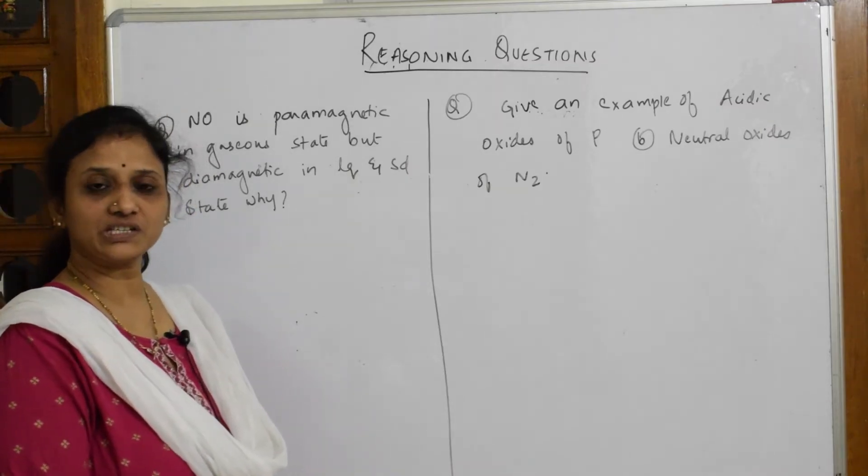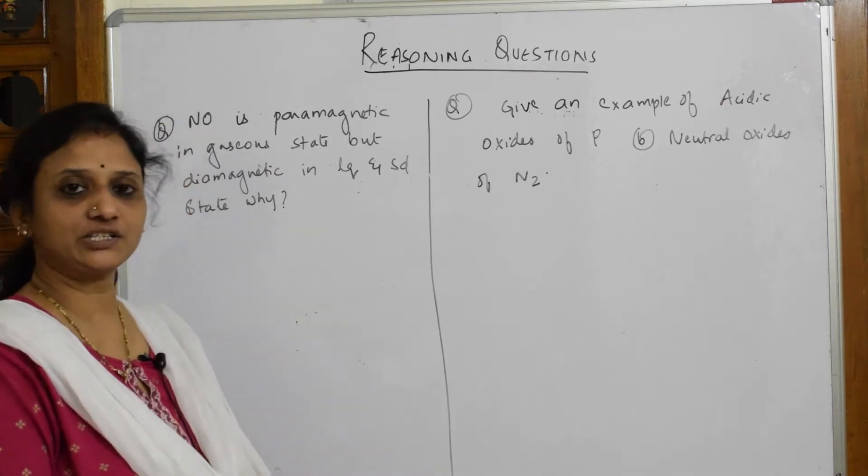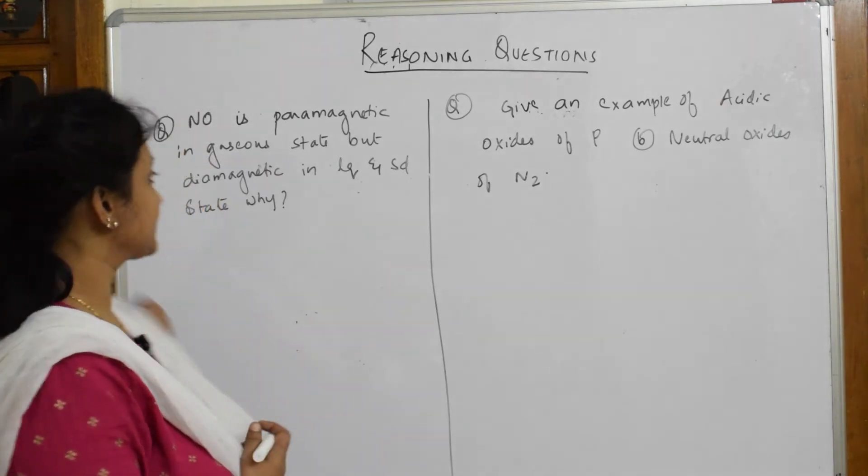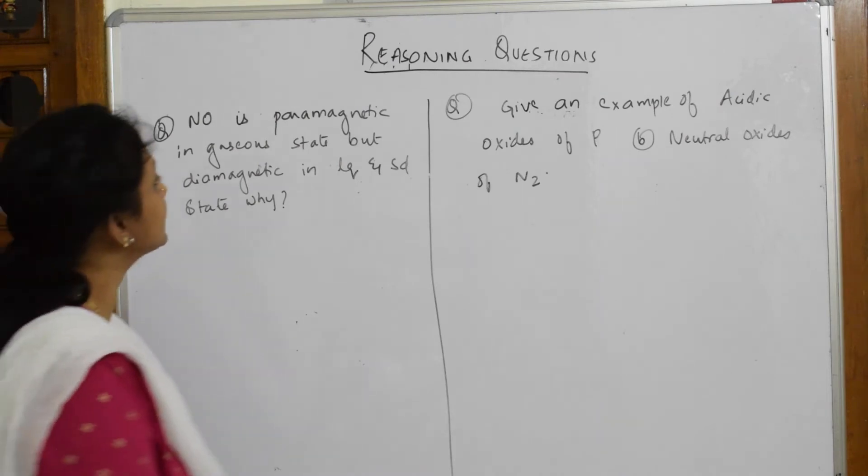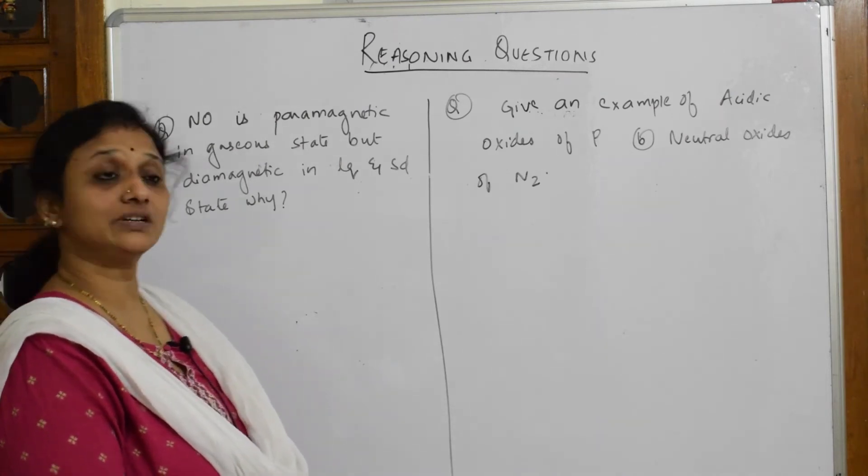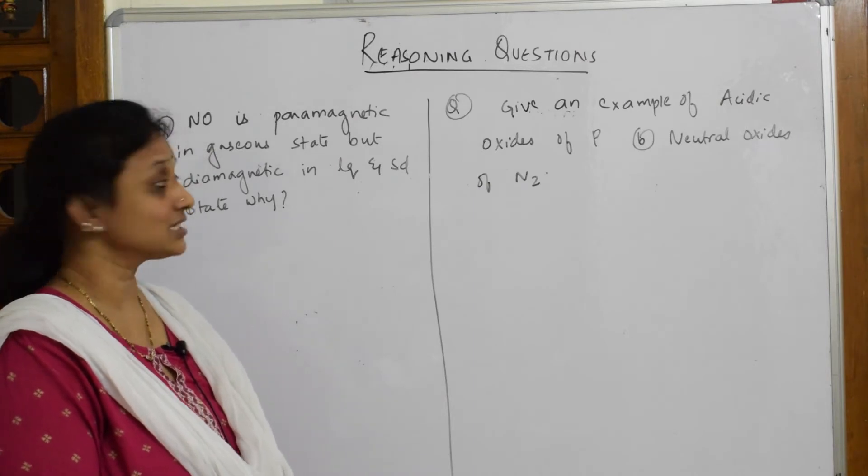Let's come back and finish your reasoning questions related to ammonia. Let's read this question. What do they give us? NO is paramagnetic in gaseous state but diamagnetic in liquid and solid state. Very nice question, let's see.